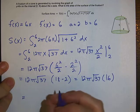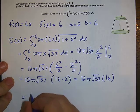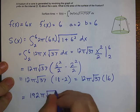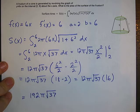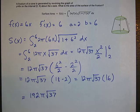Okay and if we multiply that through we get 192 pi square root of 37 and that is the surface area of this frustum.